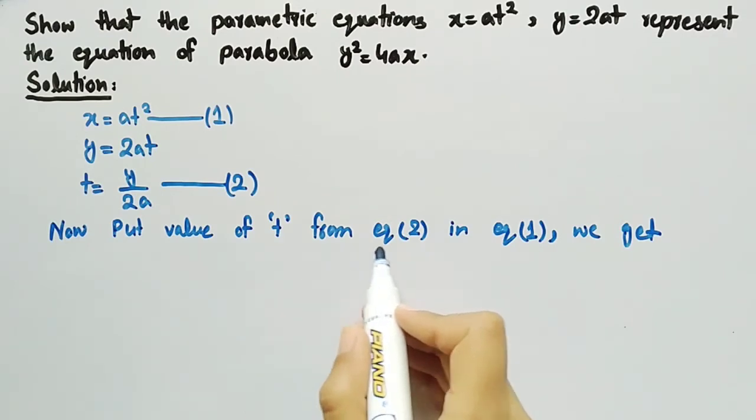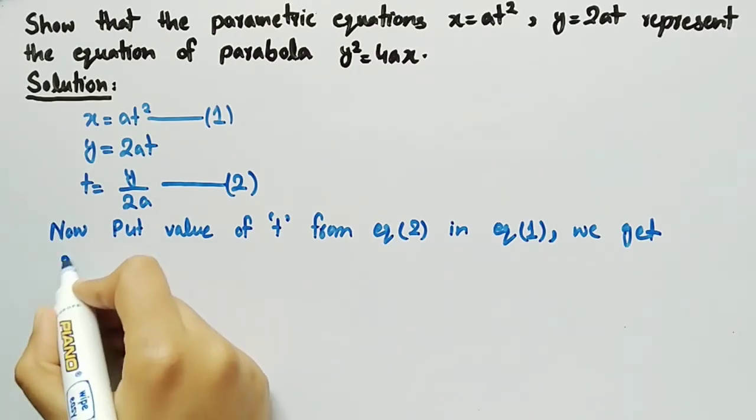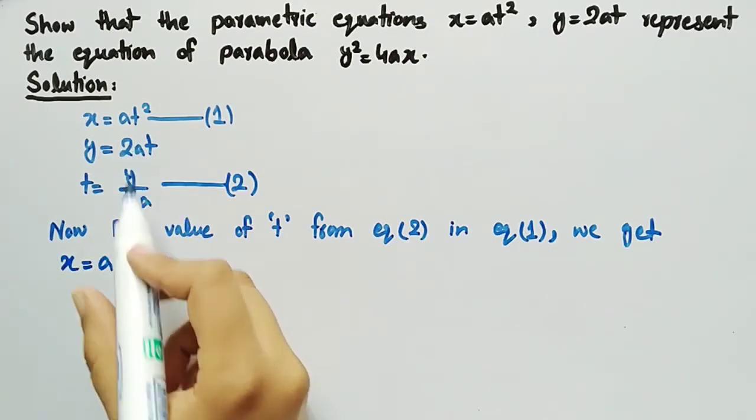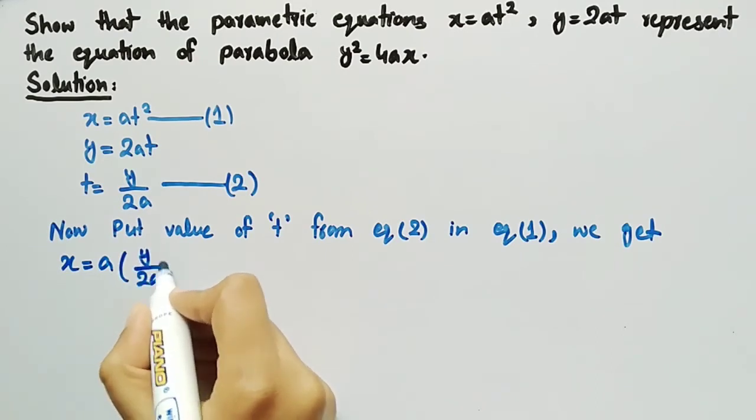Put value of t from equation 2 into equation 1. We get x equals a. Replacing t by its value, we get y by 2a whole squared.